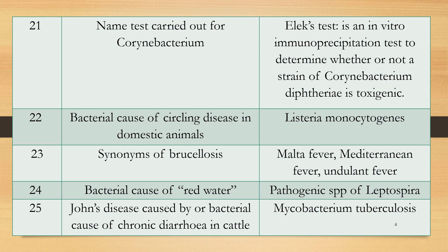Question 21: Name the test carried out for Corynebacterium. This is a frequently asked question. Answer: The Elek test. The Elek test is an in vitro immunoprecipitation or immunodiffusion test to determine whether or not a strain of Corynebacterium diphtheriae is toxigenic or not.